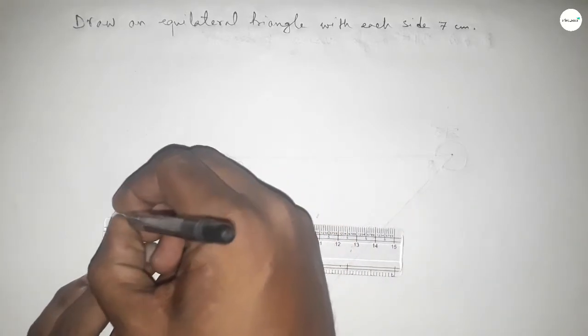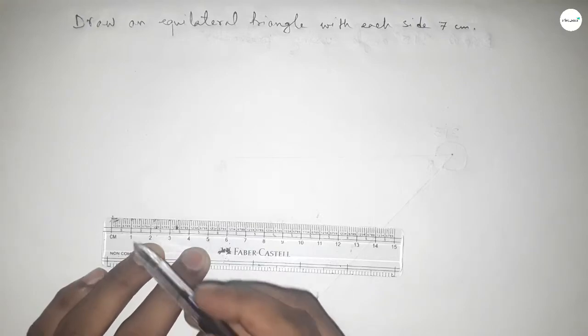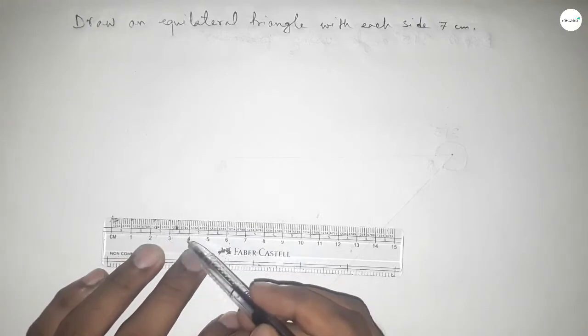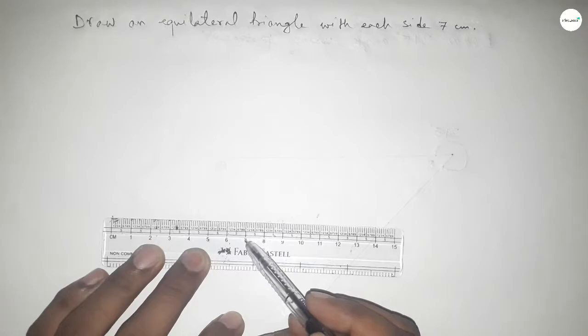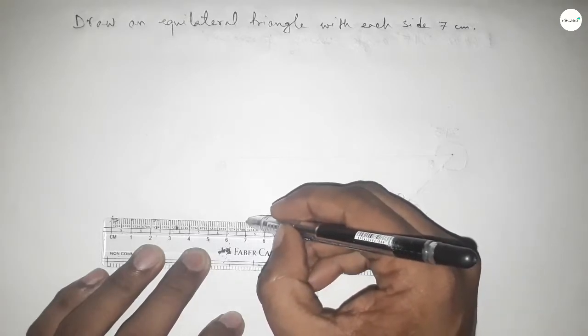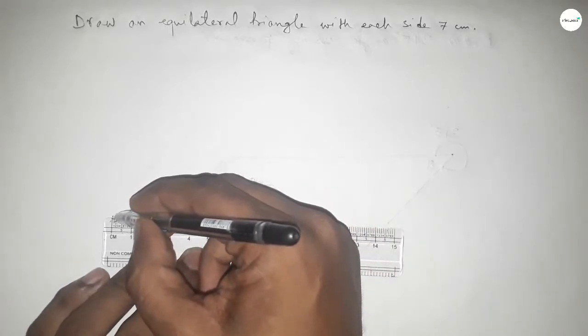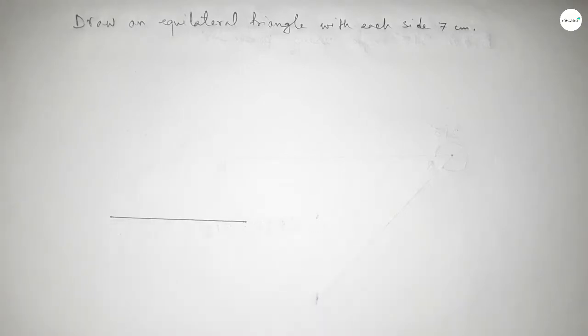This is starting 0, then this is 1, 2, 3, 4, 5, 6, 7. So this is 7 centimeters. First drawing a line of length 7 centimeters. And this is A and this is B, so line AB equal to 7 centimeters.